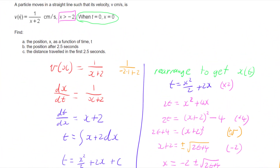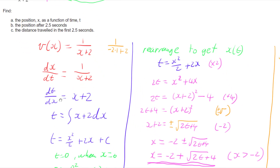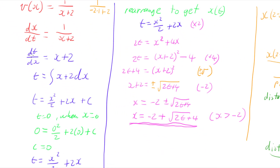So, if we have velocity as a function of position, we can convert that into a differential equation of dt/dx equals a function of position. Integrate that to get time as a function of position. Then rearranging gives position as a function of time, and from there we can use that equation to answer further questions.